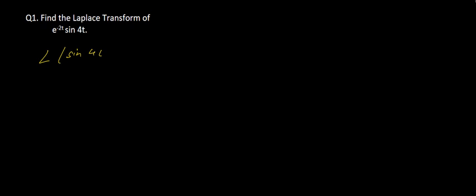Here is our first sum: find the Laplace Transform of e to the power minus 2t sin 4t. We know the formula for Laplace of sin 4t which is equal to a by s square plus a square. Here a is equal to 4.